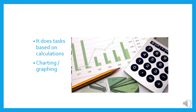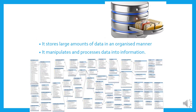Next we have spreadsheets. These allow you to do tasks based on calculations; you can also do charting and graphing with them. The next one is a database. It stores large amounts of data in an organized manner and allows you to manipulate and process data into information. Note that there is a difference between a database and a spreadsheet — a database is for really large amounts of data and is more organized. They both have their different functions.